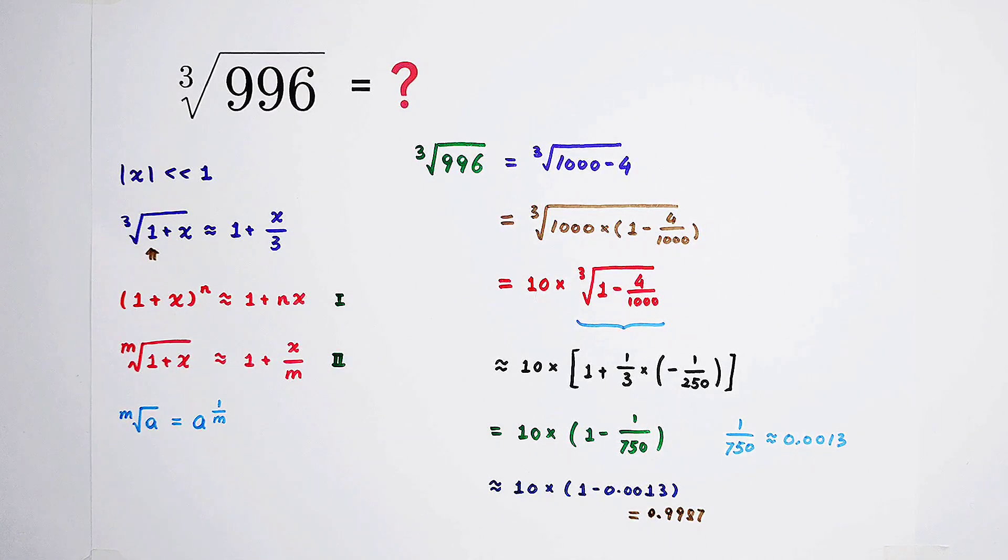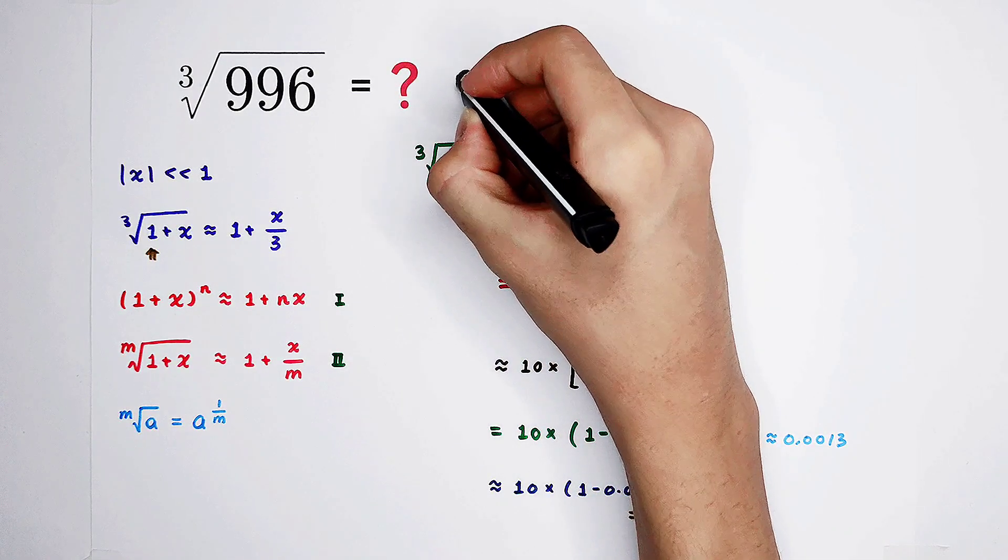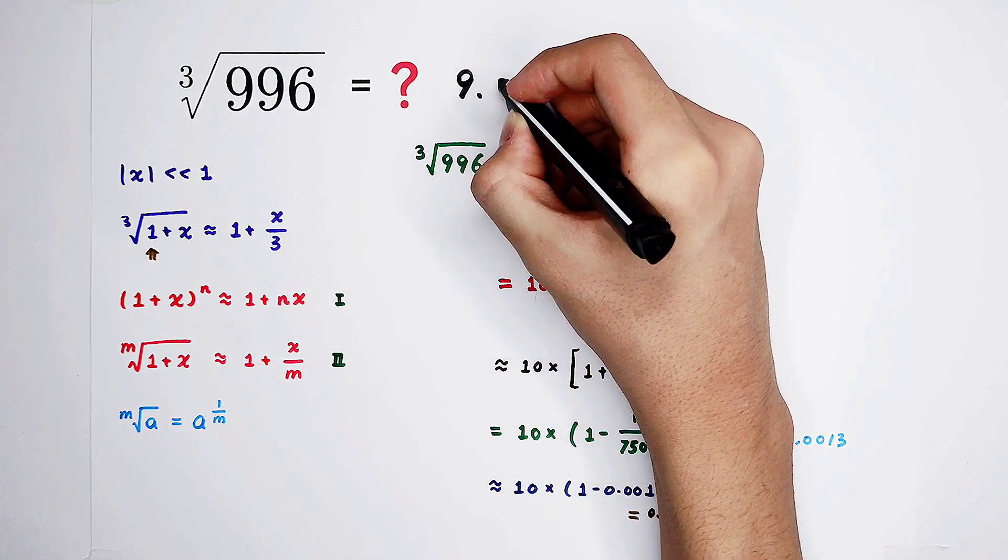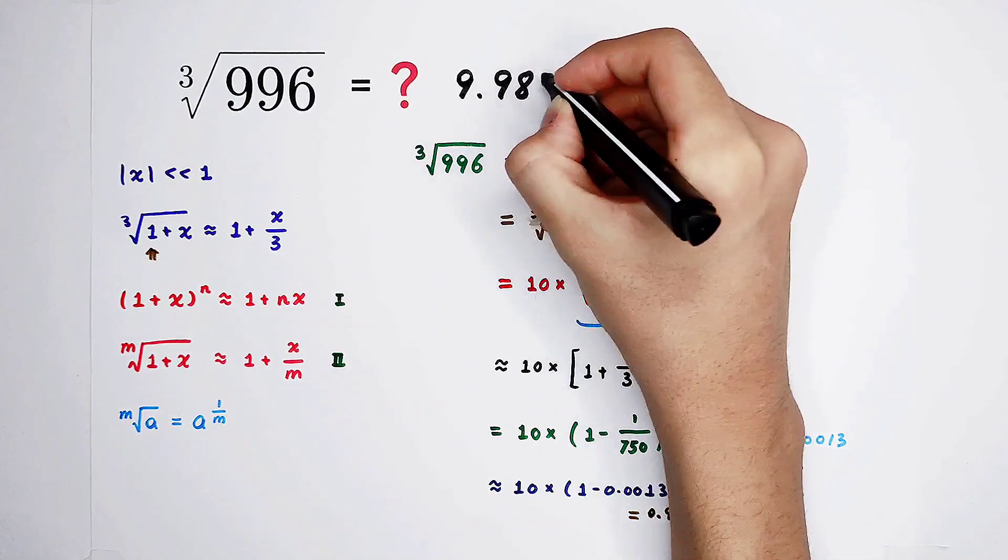1 minus 0.0013 is 0.9987. So now, times 10. 9.987.